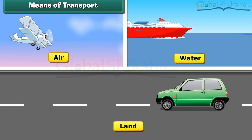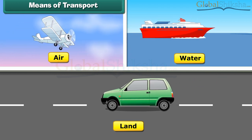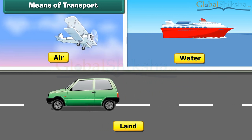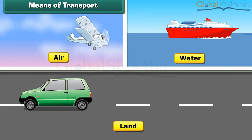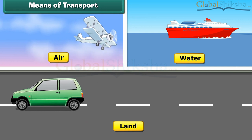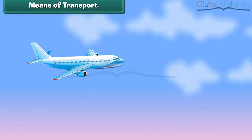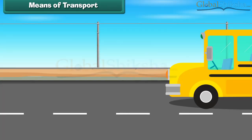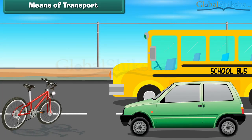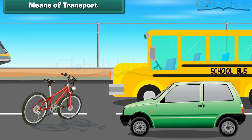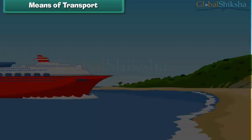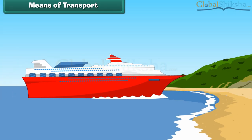Do you know that transport is carried out through various modes such as land, water and air? The vehicles used in these modes are not the same; they are different from one another. For example, airplanes fly in air. Buses, cars, bicycles and trains move on land, and ships move in water.